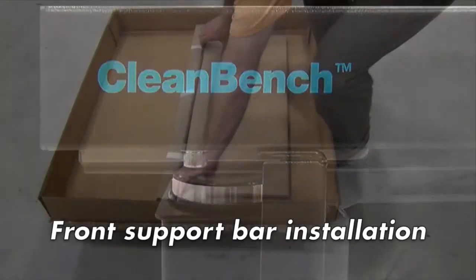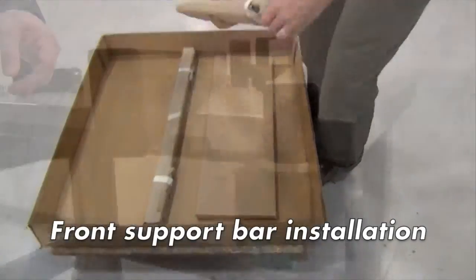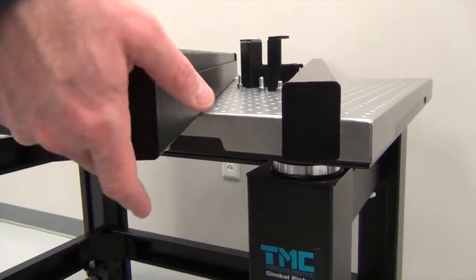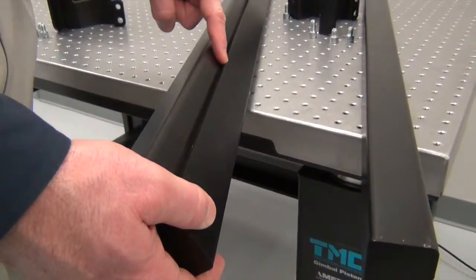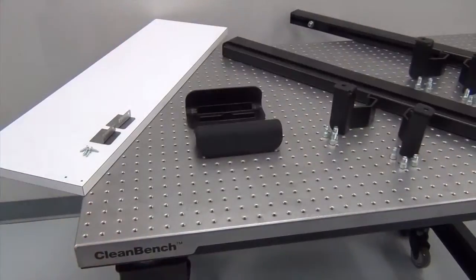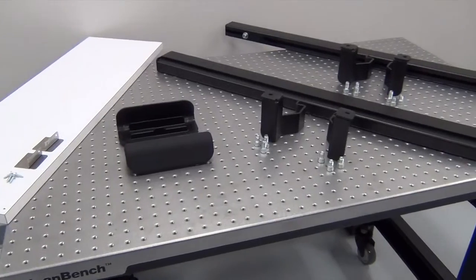Start with the front support bar. It has a tall cross section and a slot along the back edge. Locate the support bar brackets and fasteners.